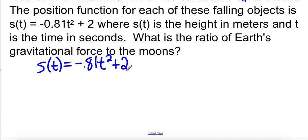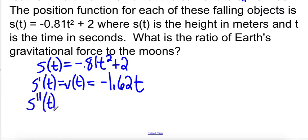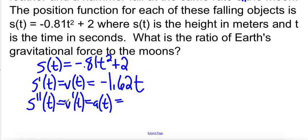We have the position function s of t equals negative 0.81t squared plus 2. The first derivative gives us the velocity function: negative 0.81 times 2 gives us negative 1.62t, and the derivative of 2 is 0. Then we want the acceleration — the second derivative of position, which is the derivative of velocity. The derivative of negative 1.62t is negative 1.62.